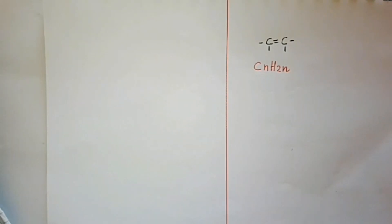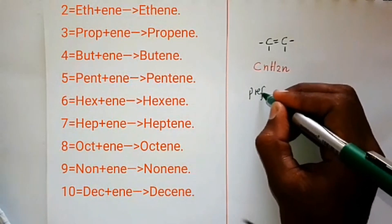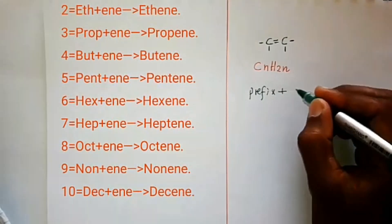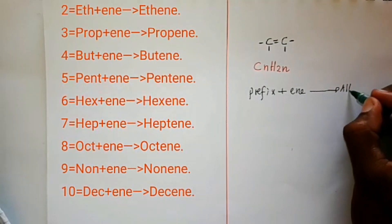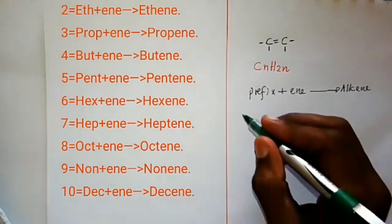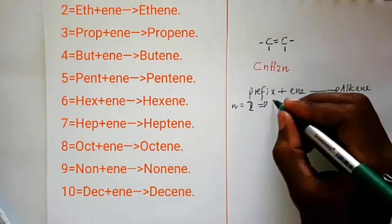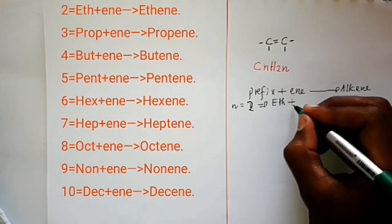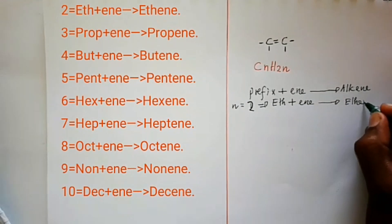Next is the nomenclature — how alkenes are named. If you want to name an alkene, you take a prefix indicating the number of carbon atoms, join it to the suffix '-ene', and that gives you an alkene. If the value of n is two, the prefix used is 'eth', and joining it to '-ene' gives you ethene.